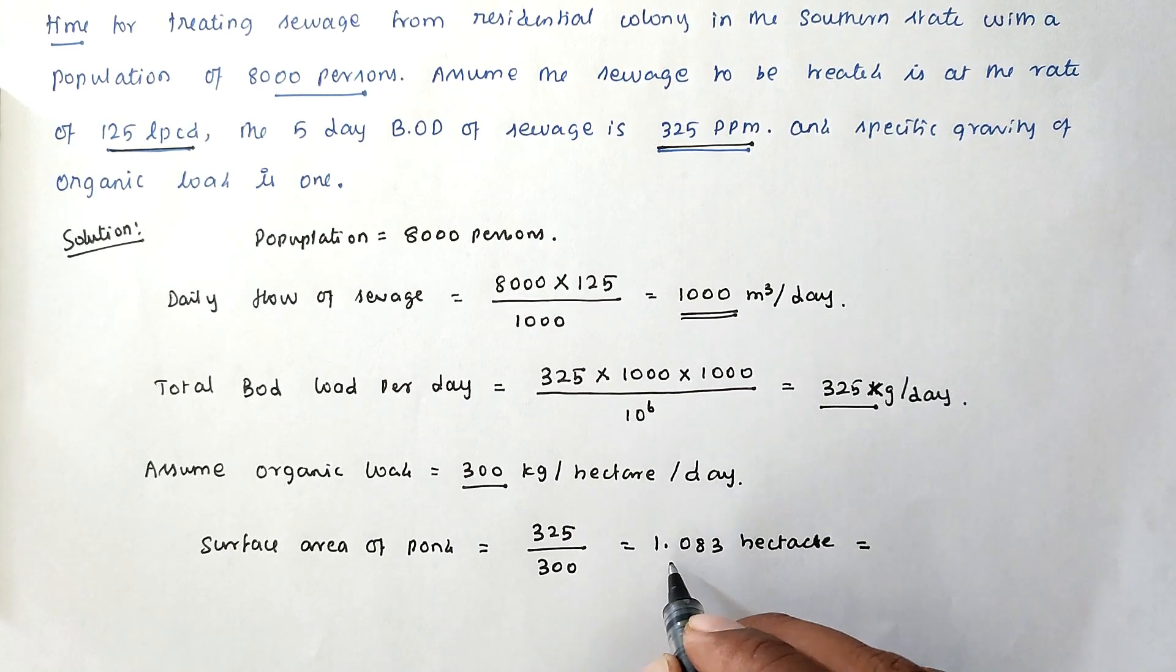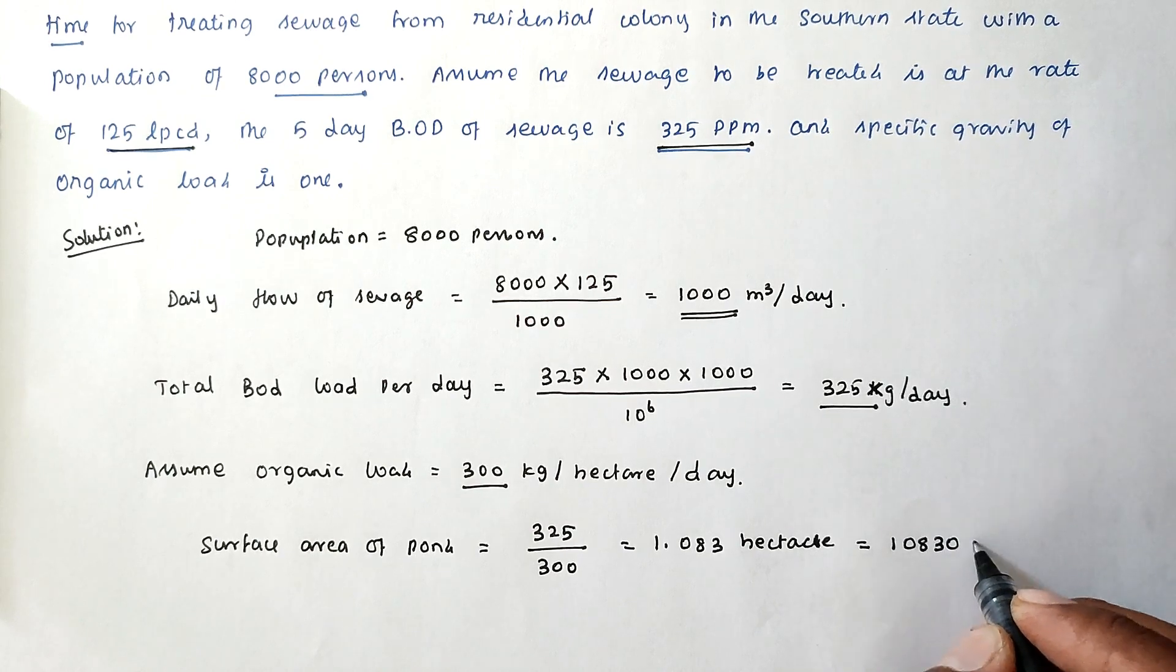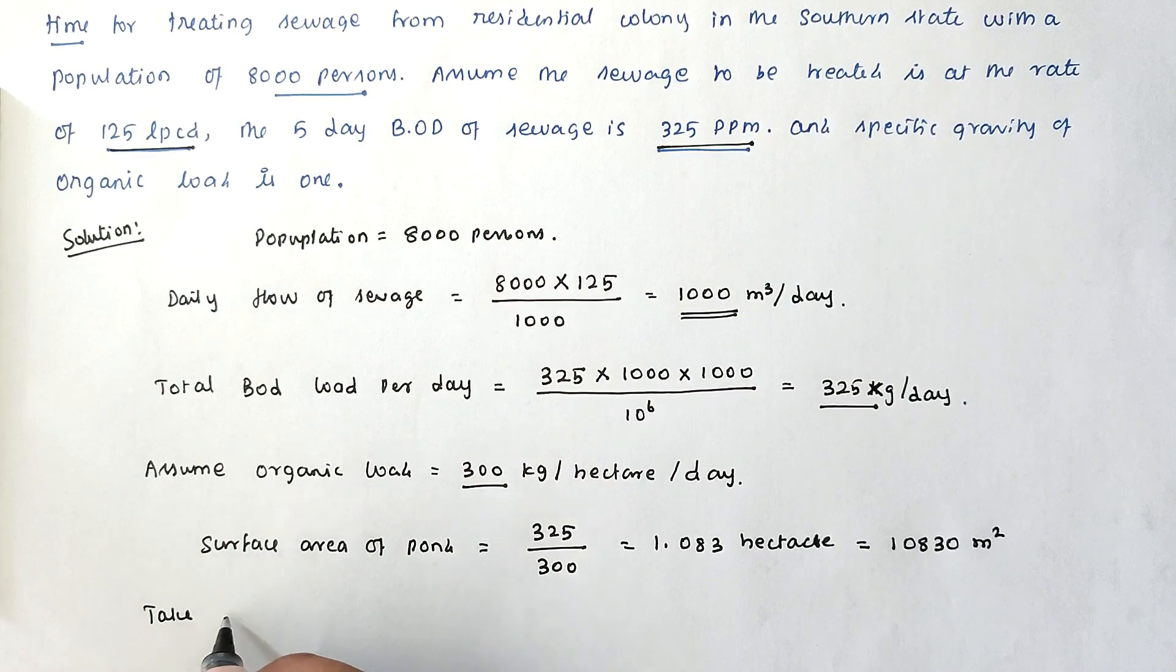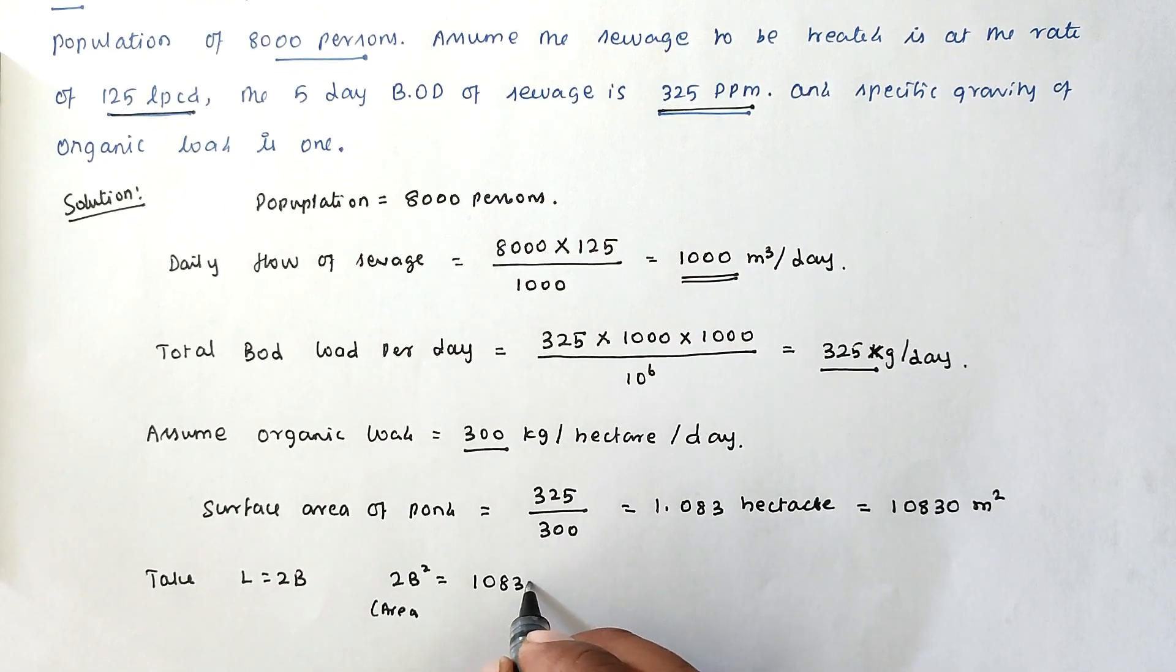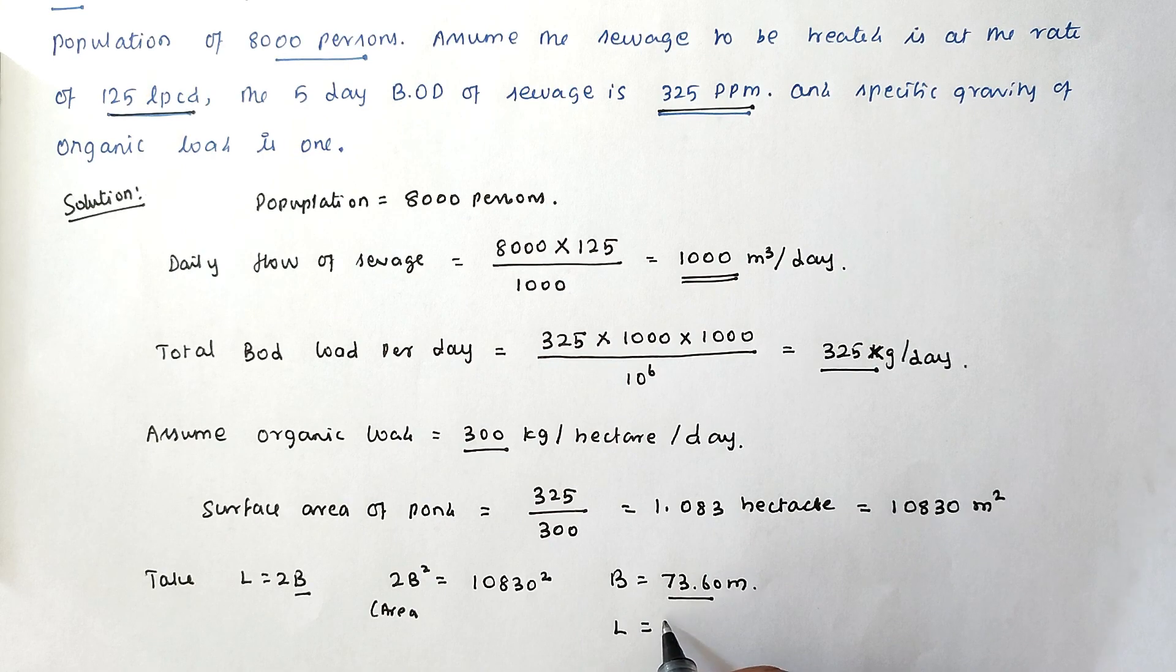We can convert into meter square, so that is into 10,000, now 10,830 meter square. This is the area. Now we can take L equal to 2B. We can assume 2B square equal to the area 10,830 square. Solving this we got the value of B is equal to 73.60 meter. We can substitute the B value, so L is equal to 147.20 meter. This is the dimension of the oxidation pond.